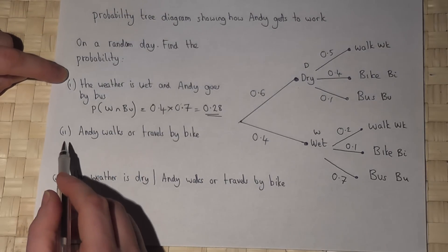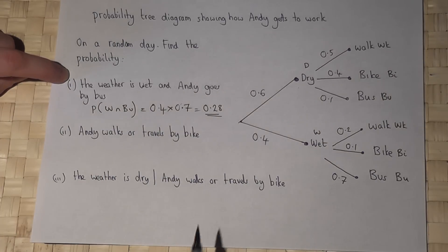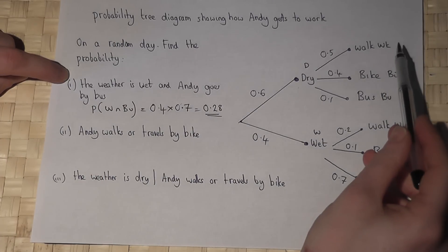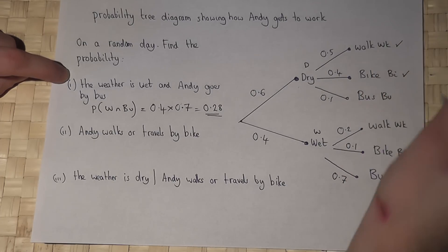Now part two asks for the chance that Andy walks or travels by bike. Now if we look down our tree diagram, that's walks, that's bike, that's walk, that's bike.